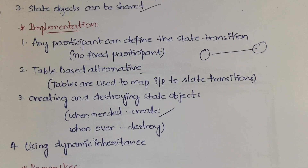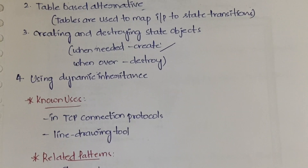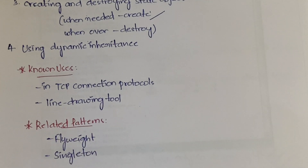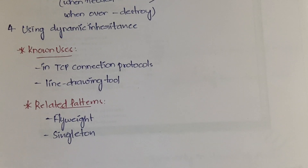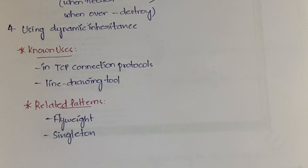For known uses, the TCPConnection protocol uses this pattern (the example we saw). It was also used in a line drawing tool. The related patterns to the State Pattern are the Flyweight Pattern and the Singleton Pattern. That's all for this video — if you didn't understand, let me know in the comments and I'll try to improve.